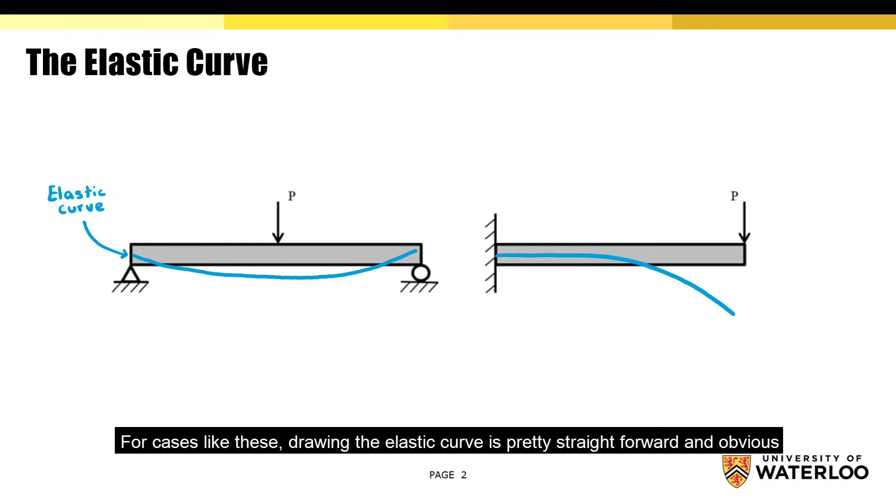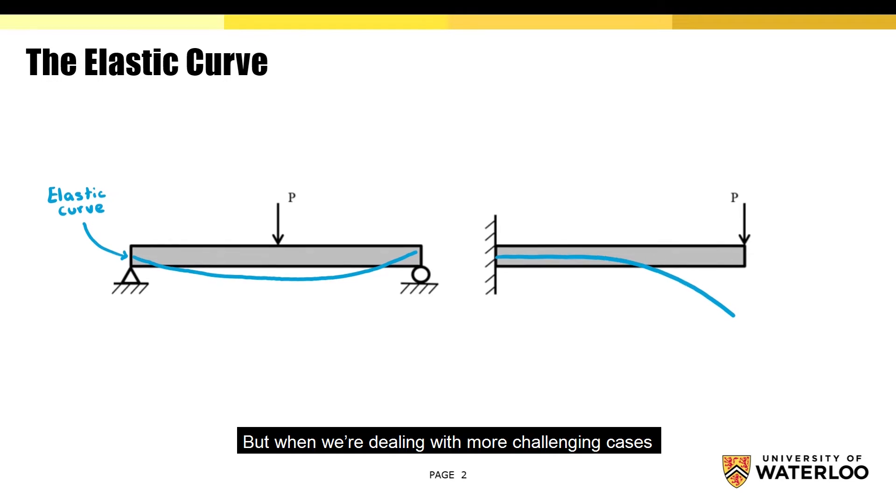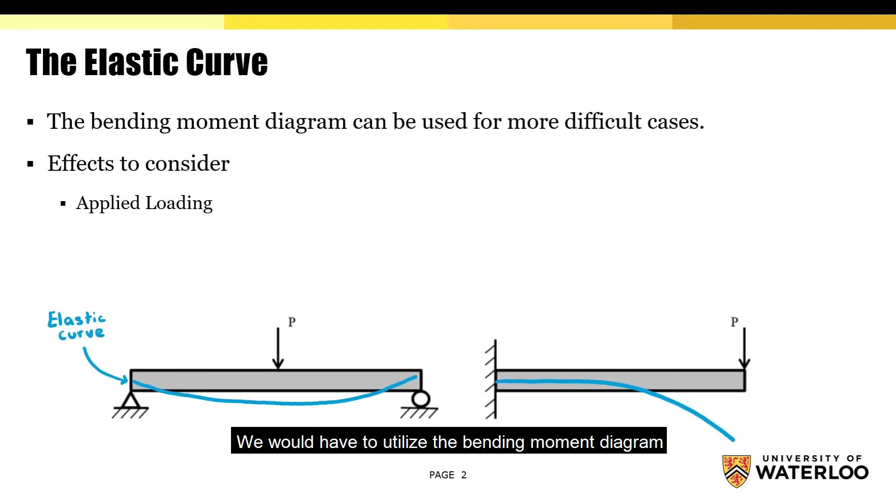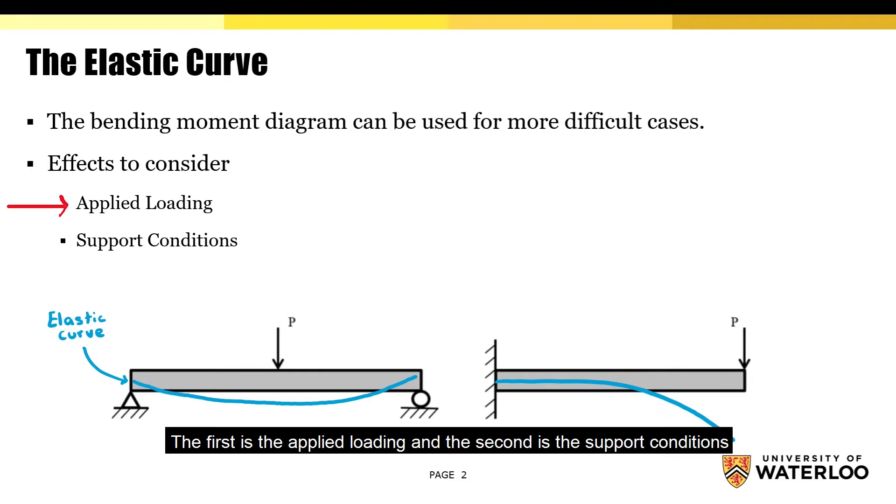For cases like these, drawing the elastic curve is pretty straightforward and obvious. But when we're dealing with more challenging cases, we'd have to utilize the bending moment diagram. Regardless of the situation, there are generally two effects you have to consider when we draw the elastic curve: the first is the applied loading and the second is the support conditions.